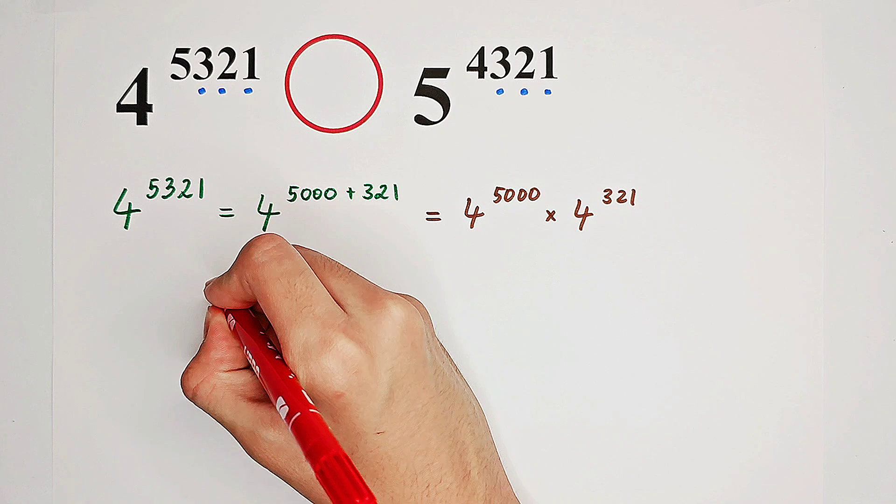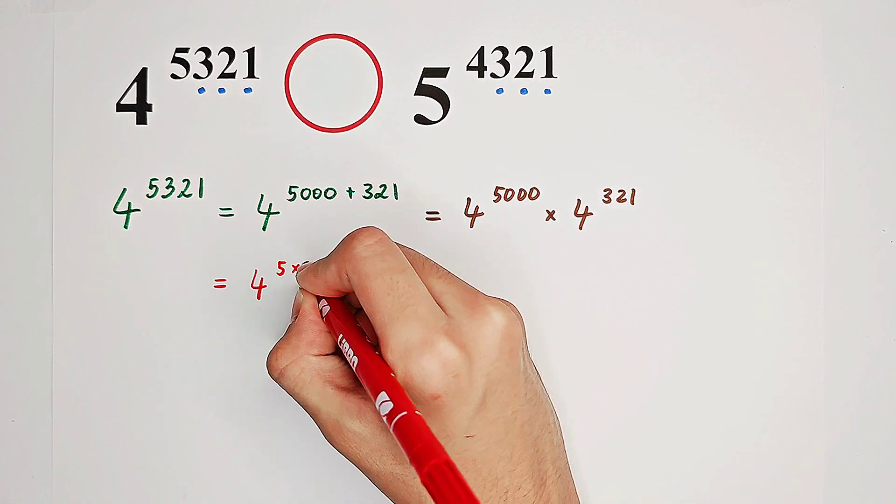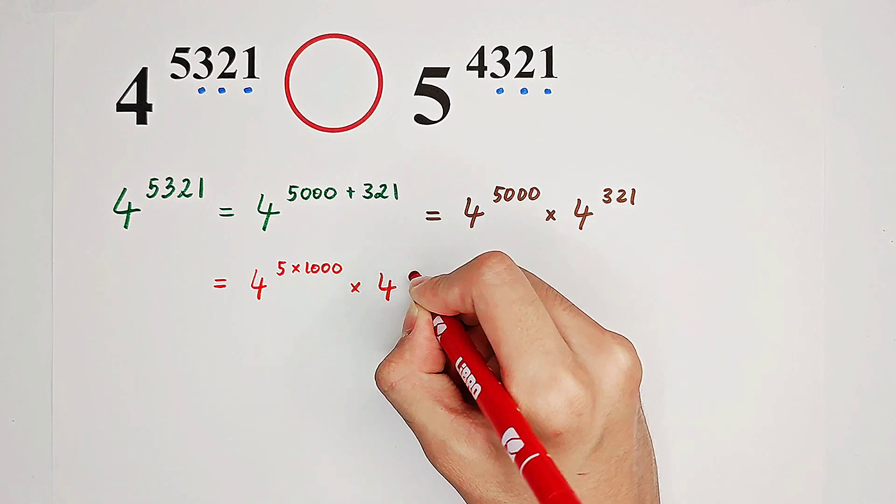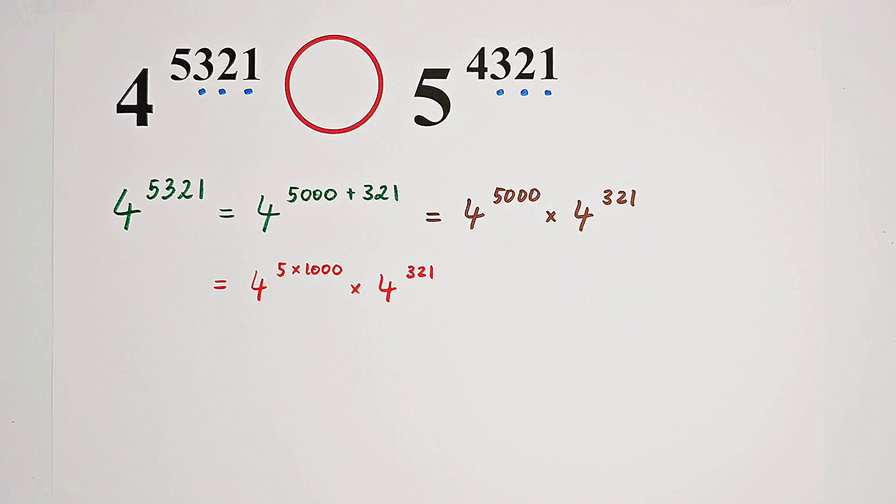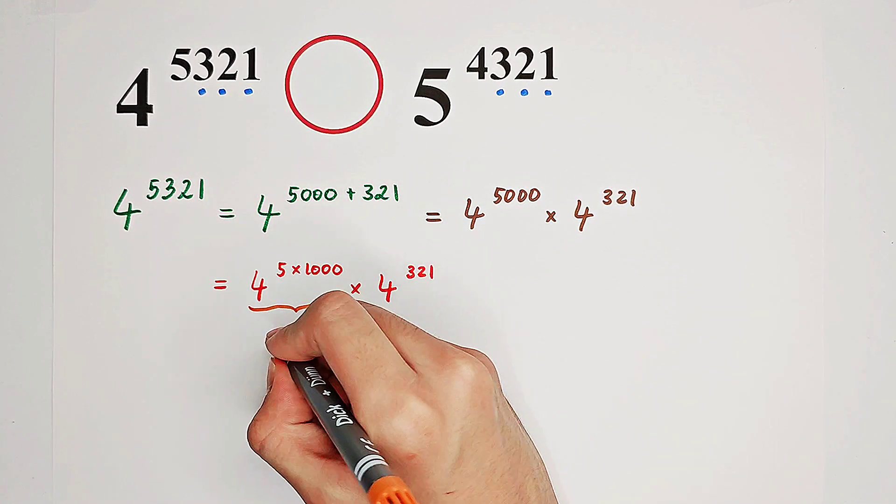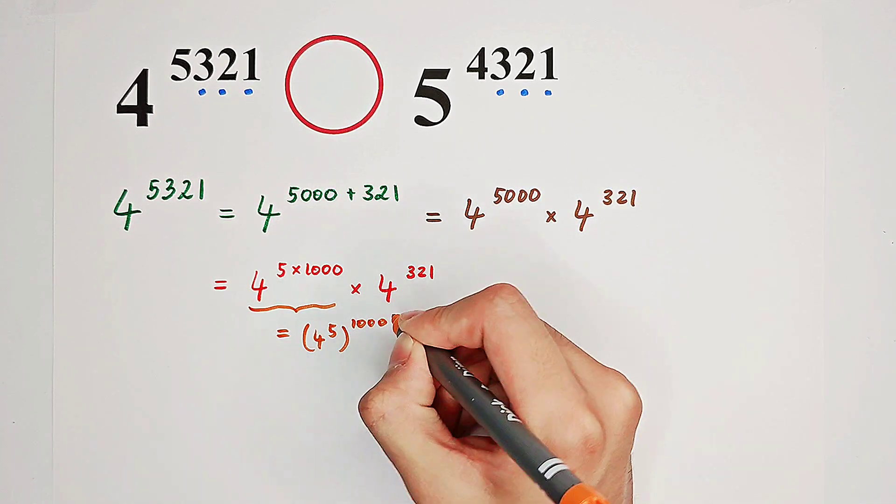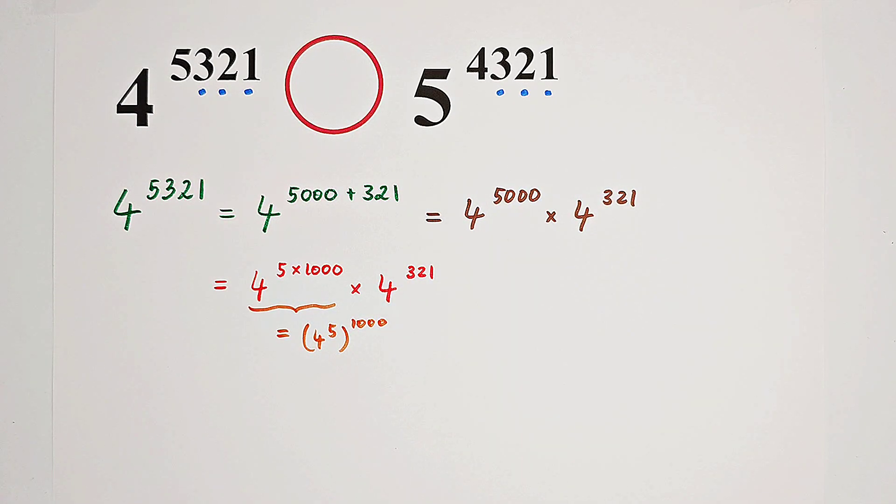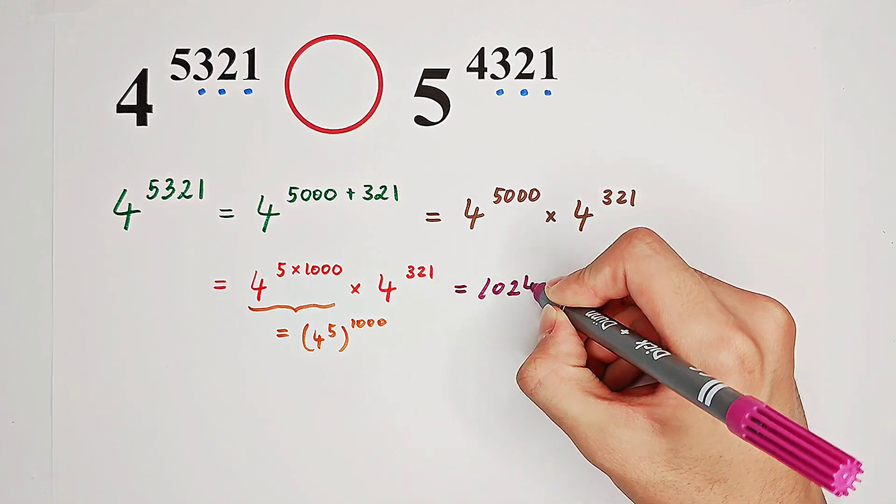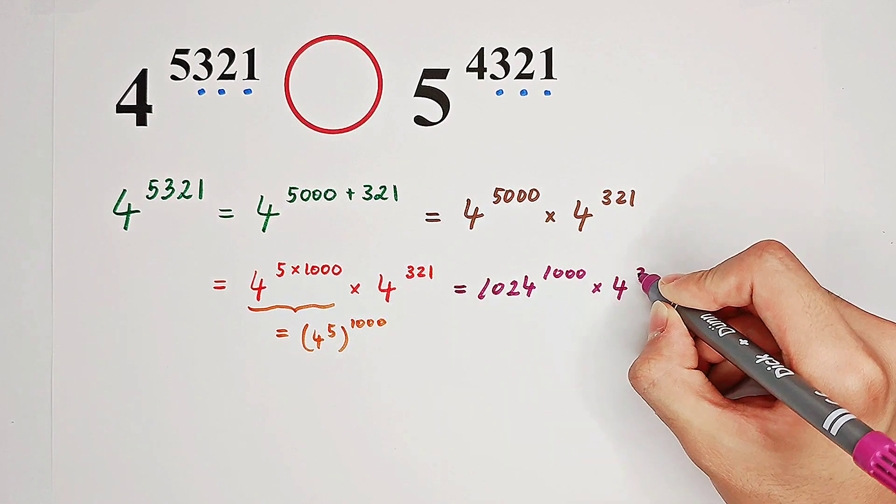And this one can also be written as 4 to the power of 5 times 1,000, then times 4 to the power of 321. And 4 to the power of 5 times 1,000 is equal to 4 to the power of 5, then all to the power of 1,000. And 4 to the power of 5 is 1,024. So it is 1,024 to the power of 1,000, then times 4 to the power of 321.